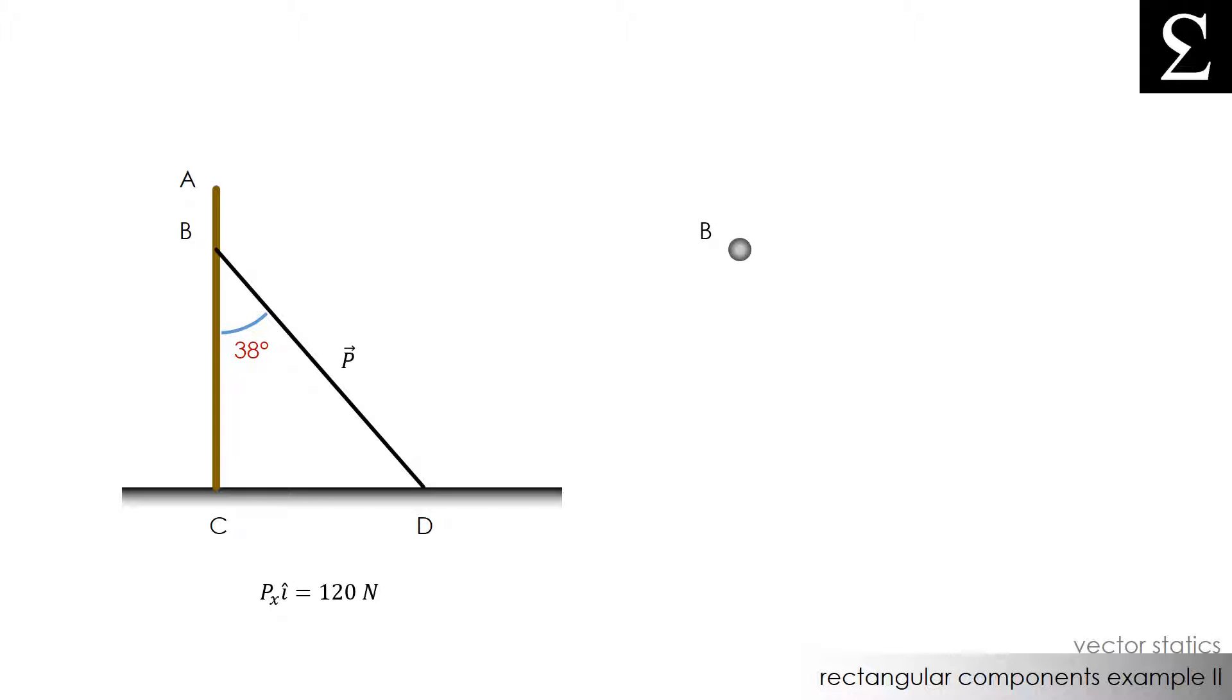The first thing we want to do is draw a free body diagram of the situation. We know that the wire is applying a tension force that is keeping the pole from falling. We also know that the horizontal component of force P is perpendicular to the pole and is directed toward the right. We also know that there is a vertical component of P that is directed vertically down from the tip of Px to the tip of P.